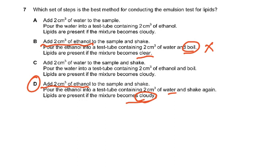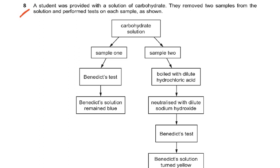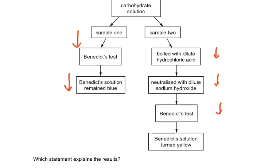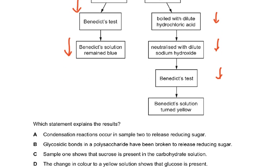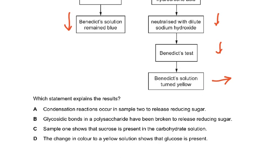Question 8: A student had a carbohydrate solution, divided into two samples. Sample A: Benedict's test — solution remained blue, meaning no reducing sugar present. Sample B: boiled with dilute acid, neutralized with sodium hydroxide, then Benedict's test — solution turned yellow, indicating reducing sugar present after HCl treatment. This means it was sucrose, which was hydrolyzed into glucose and fructose, and these reducing sugars reacted with Benedict's to give a yellow color.